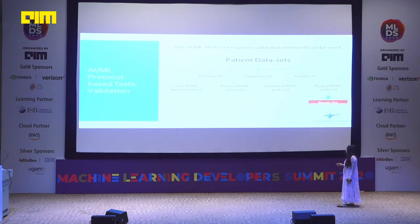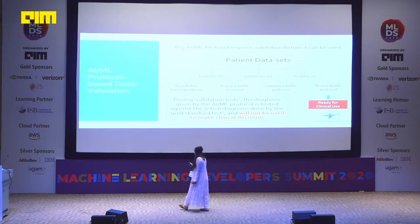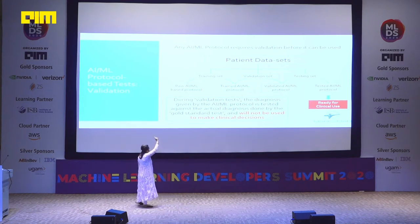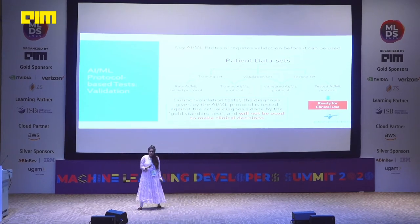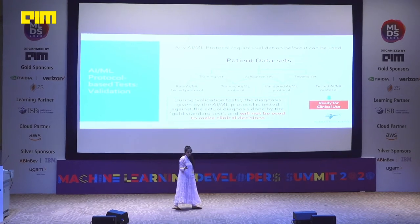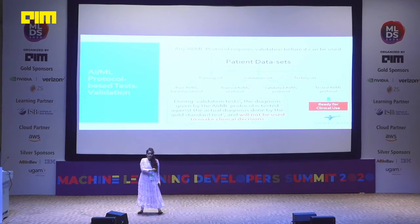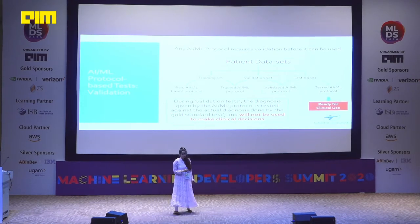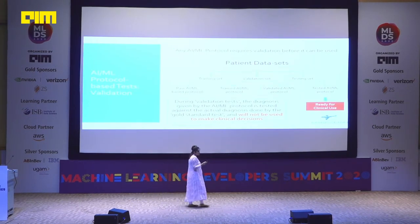This flow chart shows how we validate such tests. We take a patient data set and evaluate whether the AIML protocol is good to use. We take the raw AIML protocol data into a training set. Once trained, we use this trained AIML protocol in a validation set. Once validated, it goes into a testing set, and once tested, it is ready for clinical use. The key point: once the AIML protocol is validated, we compare it with the gold standard, and at that stage it is not yet used to make clinical decisions. Even if an AIML protocol is validated but not tested, it is not ready for clinical use.